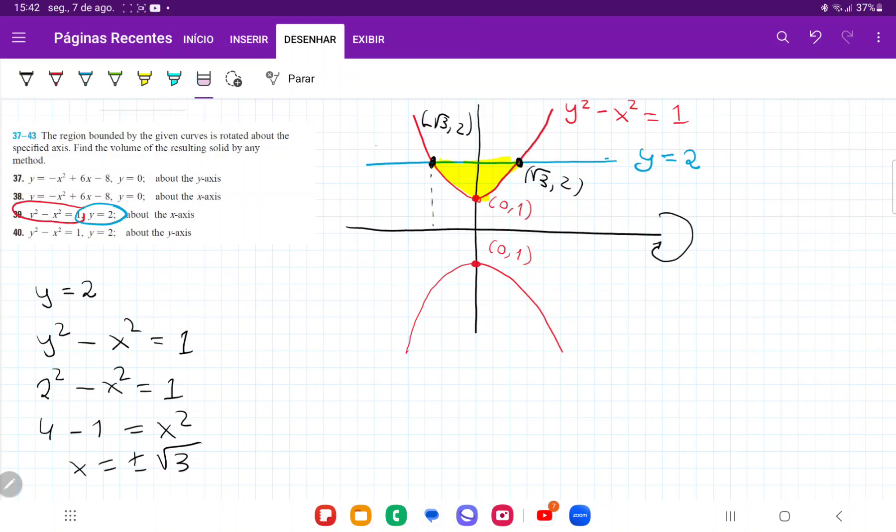This is negative root 3 comma 2, and then this over here is positive root 3 comma 2. So once we have these boundaries, let's think about what happens when we rotate this area about the x-axis. Since we only need the upper part of the parabola, the lower part is not relevant.